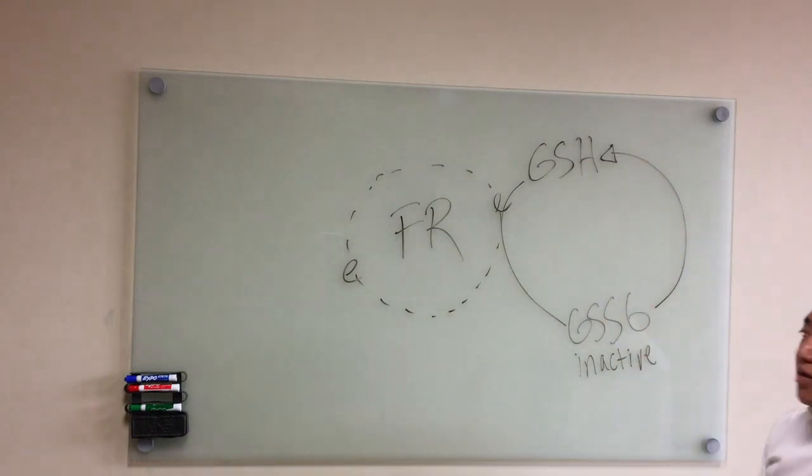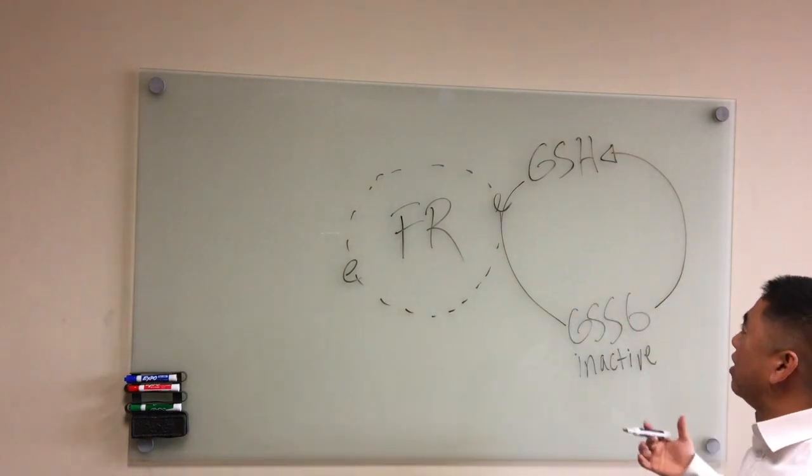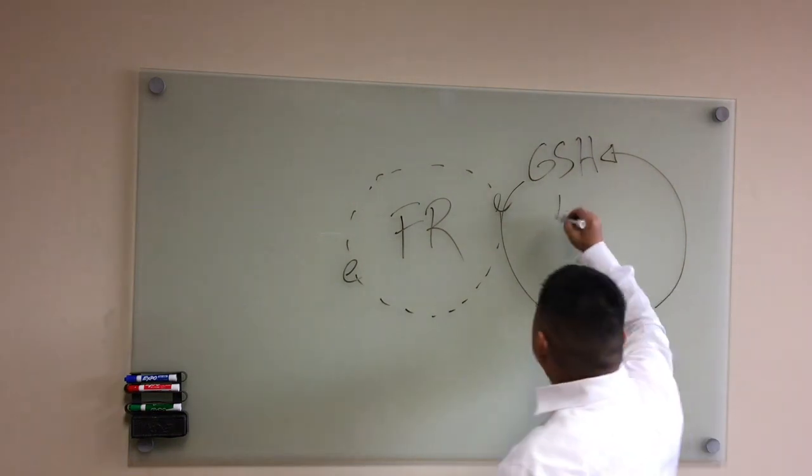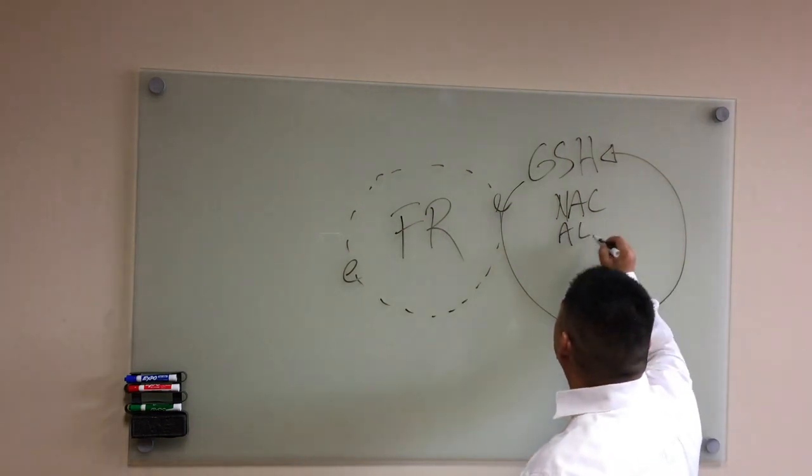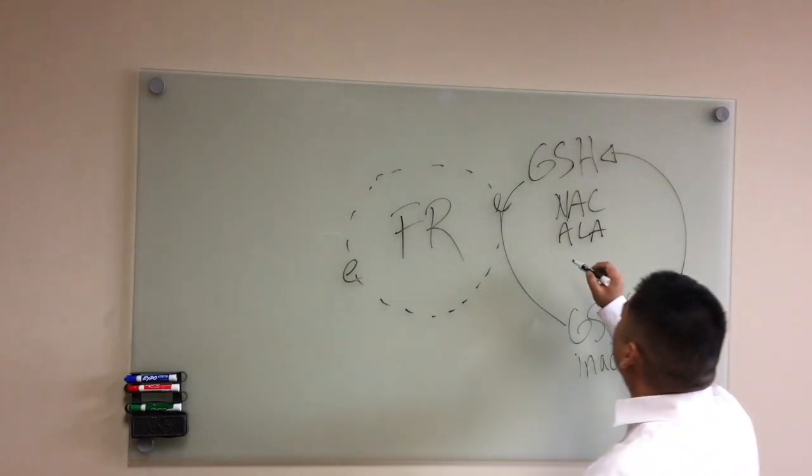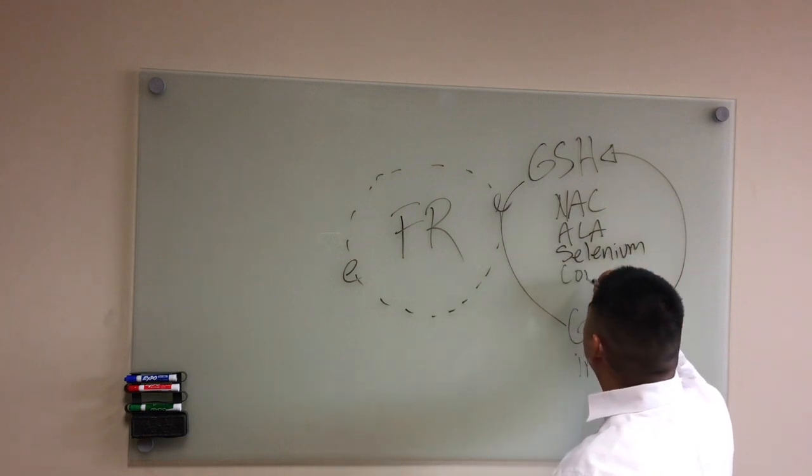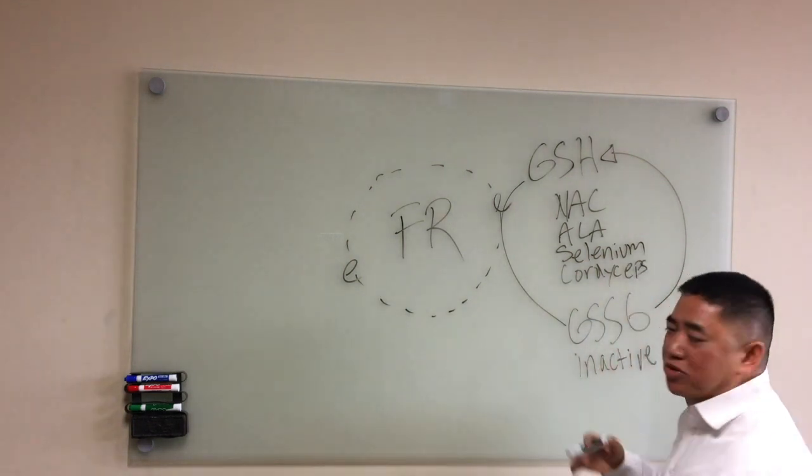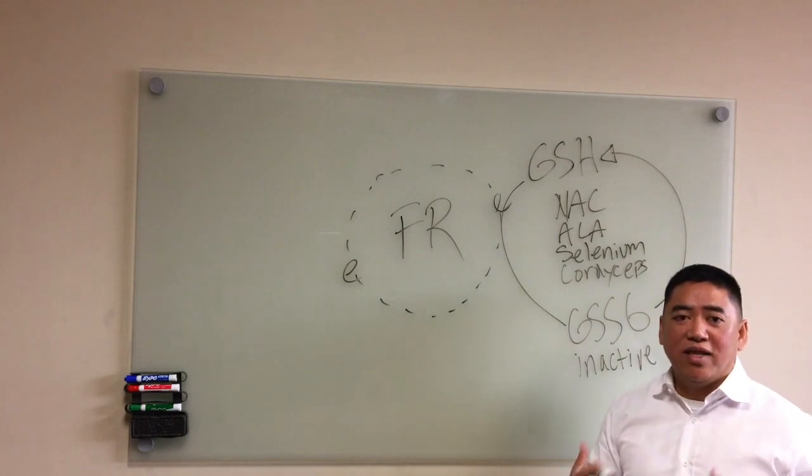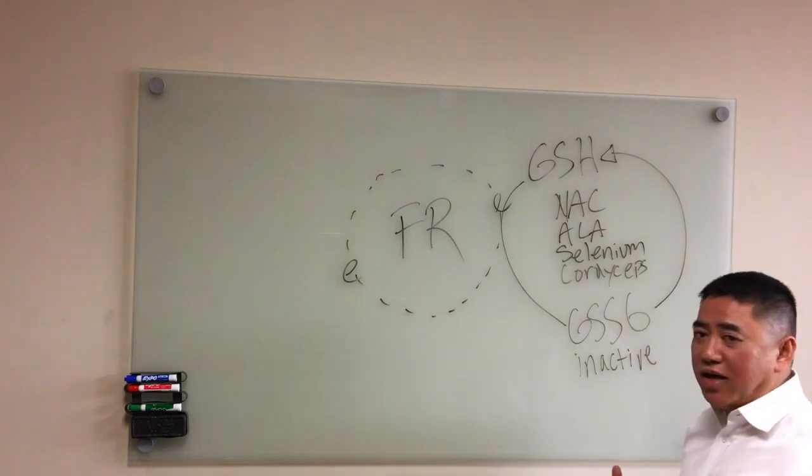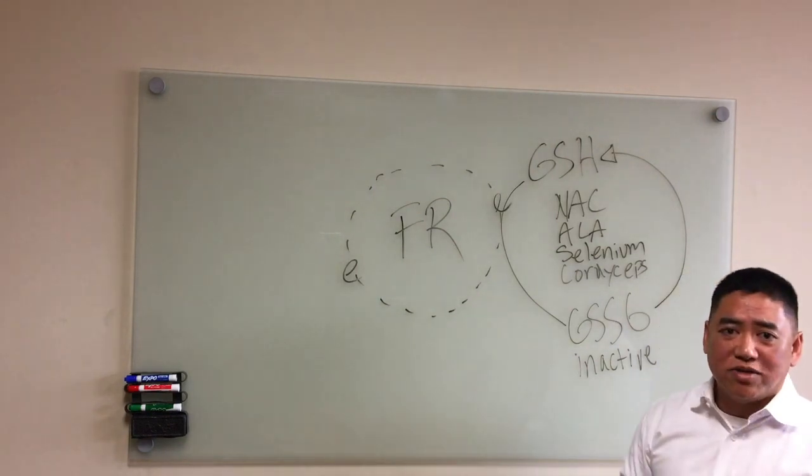This can't bind to any more free radicals until it recycles back into glutathione. Now what are some of the things that help to recycle this? These are things that I recommend to my patients: N-acetylcysteine, alpha-lipoic acid or ALA, selenium, cordyceps. Cordyceps are actually a fungus, and there's lots of research on cordyceps now in its ability to really fight cancer.